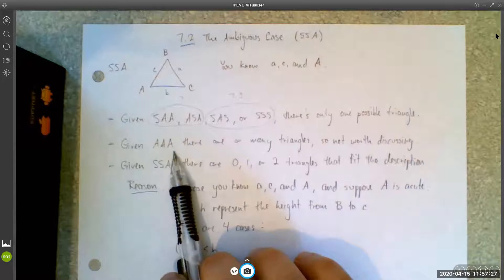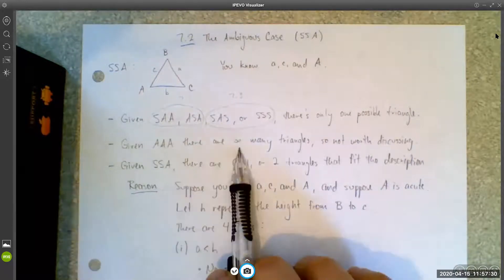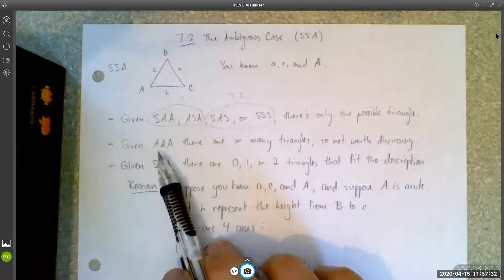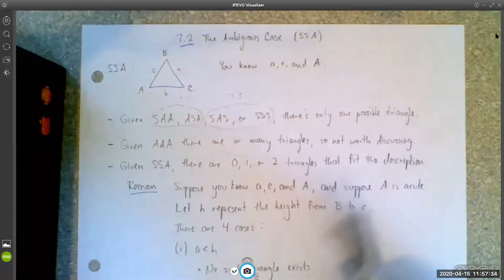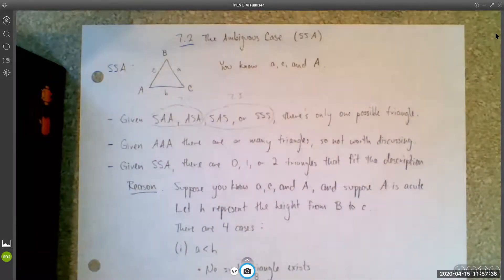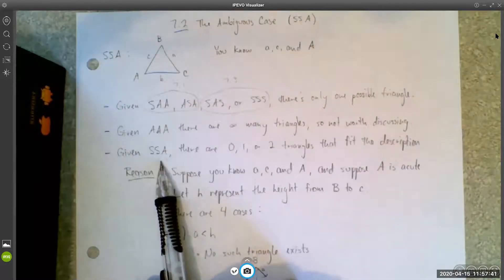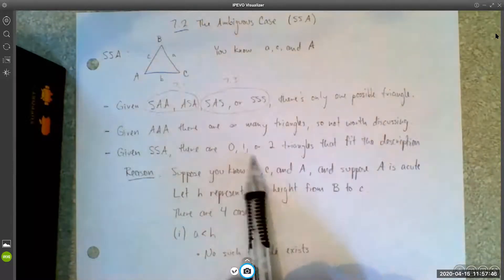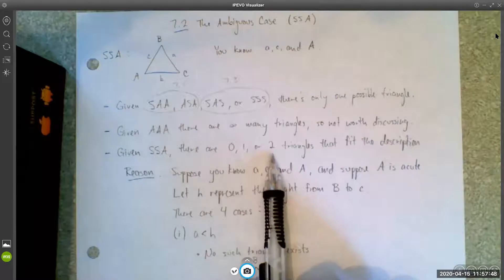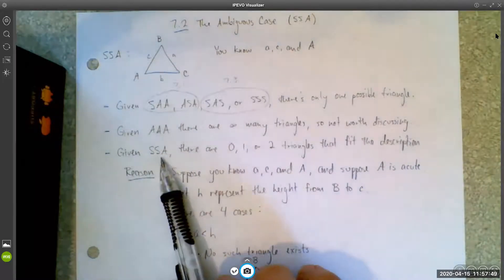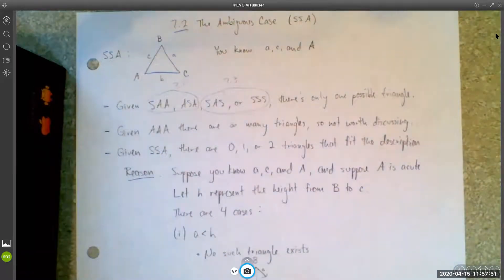If you were given angle-angle-angle information, there would be infinitely many triangles that would fit that description, so it's not even worth discussing — it's impossible to solve. But if you're given side-side-angle information, this is the ambiguous case. There are 0, 1, or 2 possible triangles that will fit the description you're given.